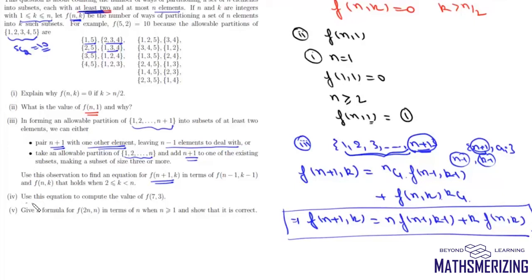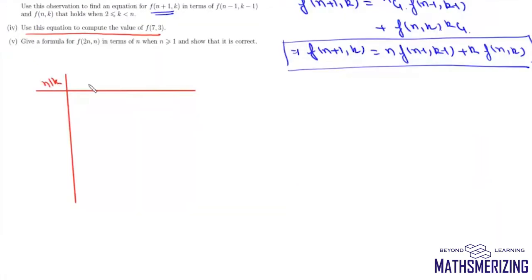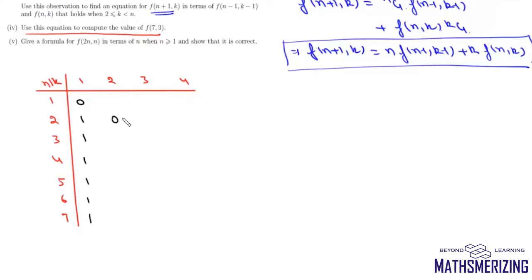The fourth question asks us to compute f(7,3) using this recurrence. We form a partition table where k takes values 1, 2, 3, 4 and n takes values 1 through 7. We already know f(1,1)=0, and f(n,1)=1 for n≥2. Also, f(n,k)=0 whenever k > n/2, so for n=3, entries for k=2 and k=3 are 0; for n=5, entries for k=3 are also 0.